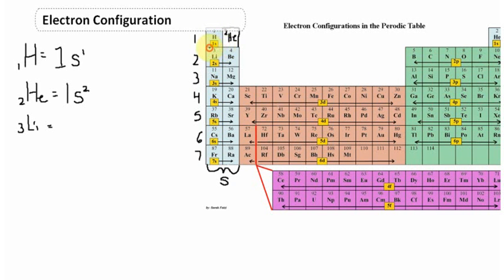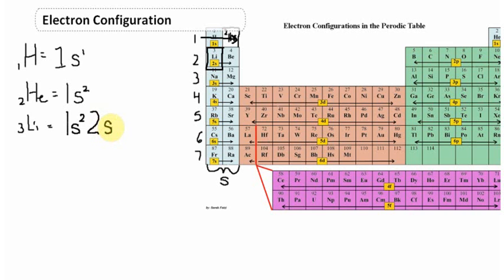Next up is lithium, element number 3, which has 3 electrons. You start filling from the beginning — on the first energy level in the s orbital, it will have two electrons: 1s2. There's no other room in the s orbital on the first energy level, so the third electron goes into the second energy level, the s orbital, putting one electron there. So lithium is 1s2 2s1.